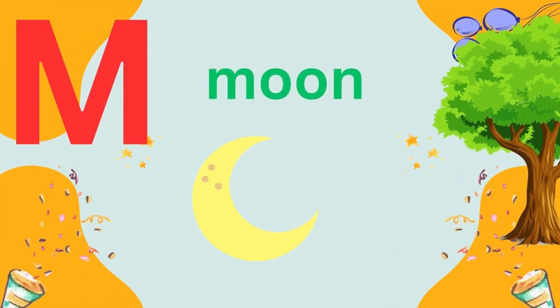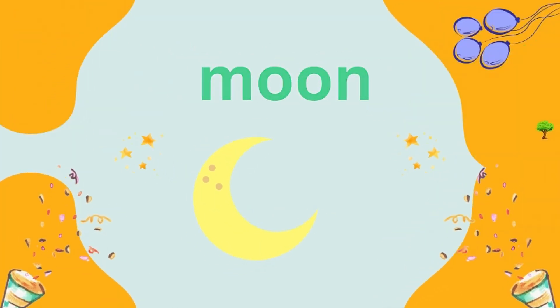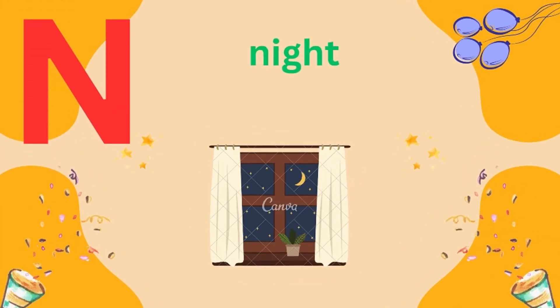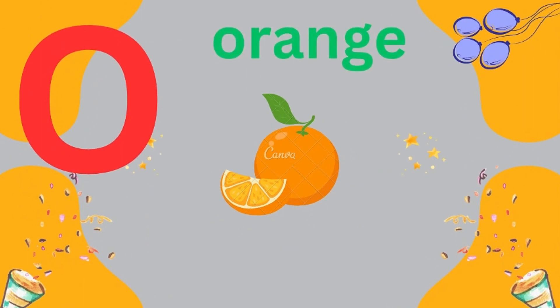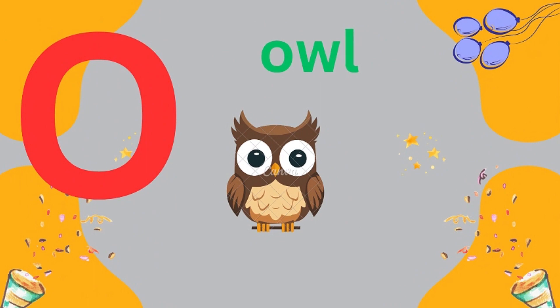N is for moon. N is for night. O is for orange. O is for owl.